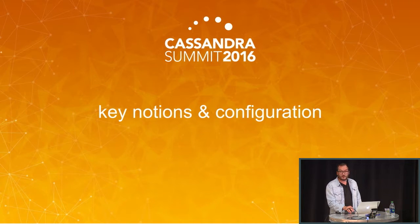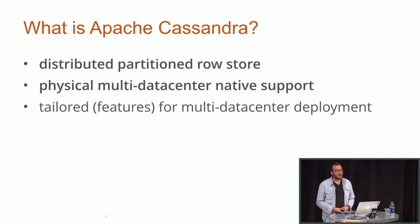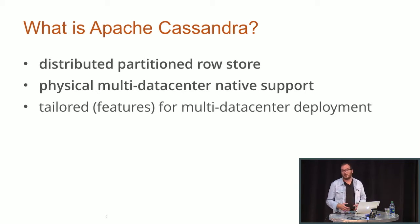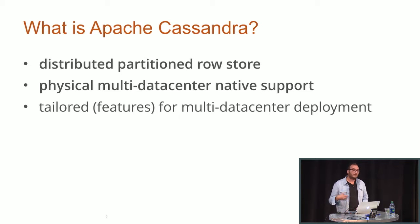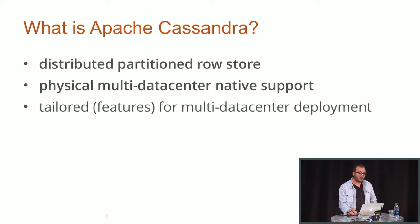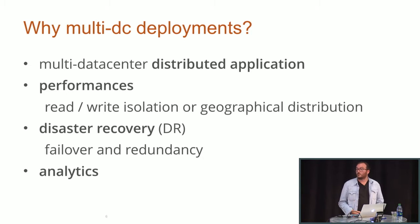So let's go through key notions and configuration. What is Apache Cassandra? At its core it's a distributed partition row store and it has physical multi data center native support. This is mainly the reason why we went with Cassandra ourselves — we had native multi data center support, as opposed to other databases where it's often an afterthought. In Cassandra it's definitely at its core from the beginning.